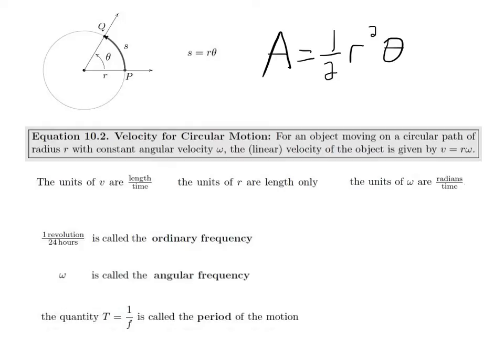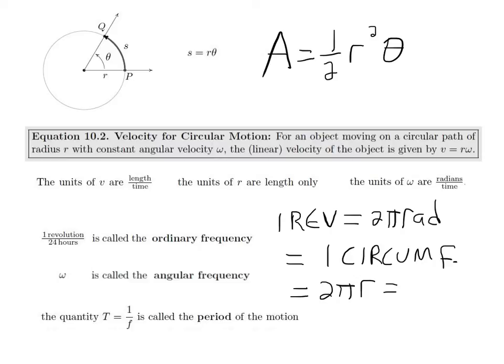One thing this book does not do that you might consider useful is a relationship that helps you going from linear velocity to angular velocity, and vice versa. And that relationship is this: 1 revolution is 2 pi radians, but it's also equal to 1 circumference. 2 pi radians, and that could either be 2 pi r, or it could be pi d.